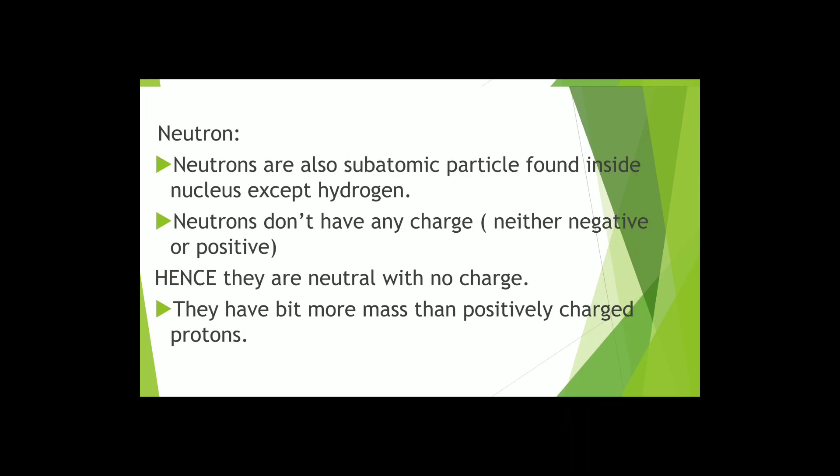The second subatomic particle is called neutron and is found inside the nucleus except in hydrogen atom. Neutrons do not have any charge, neither positive nor negative. Neutrons are considered as neutral particles with no charge. They have a bit more mass than the positively charged proton.